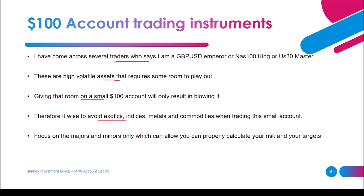Therefore it is wise to avoid exotics like USD/Mexican Peso, USD/Russian Ruble, USD/South African Rand, and so forth. You also need to avoid indices, metals such as gold against USD or euro, and commodities like wheat, coffee, and maize when trading with a hundred dollar account. Focus on the majors and minors — basic pairs like EUR/USD, USD/CAD, USD/CHF — as these allow you to properly calculate your risk and targets, and it's easier to count pips on them.